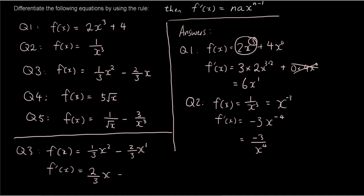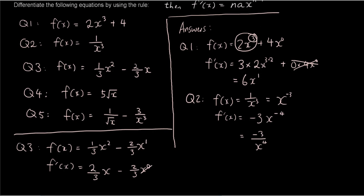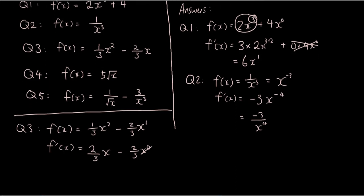Now the number in front of x, sorry the power of x is 1, so we bring that to the front, it's still 2 over 3. x to the power of 1 minus 1 becomes x to the power of 0. x to the power of 0 is 1 so we don't write that. So that's the final answer.